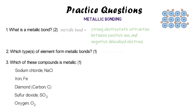The attraction between them is your metallic bond. It only happens within metals, never between non-metals. Of all those compounds, iron is the only one comprised only of a metal, so that is the only one that is metallic.